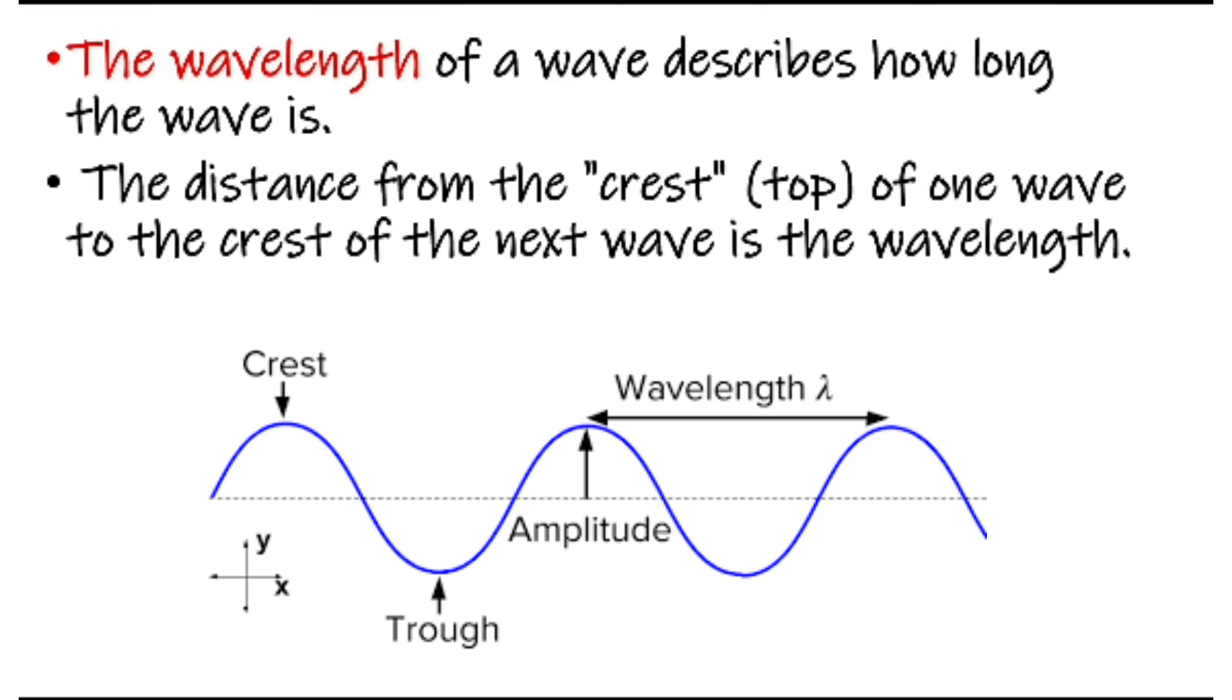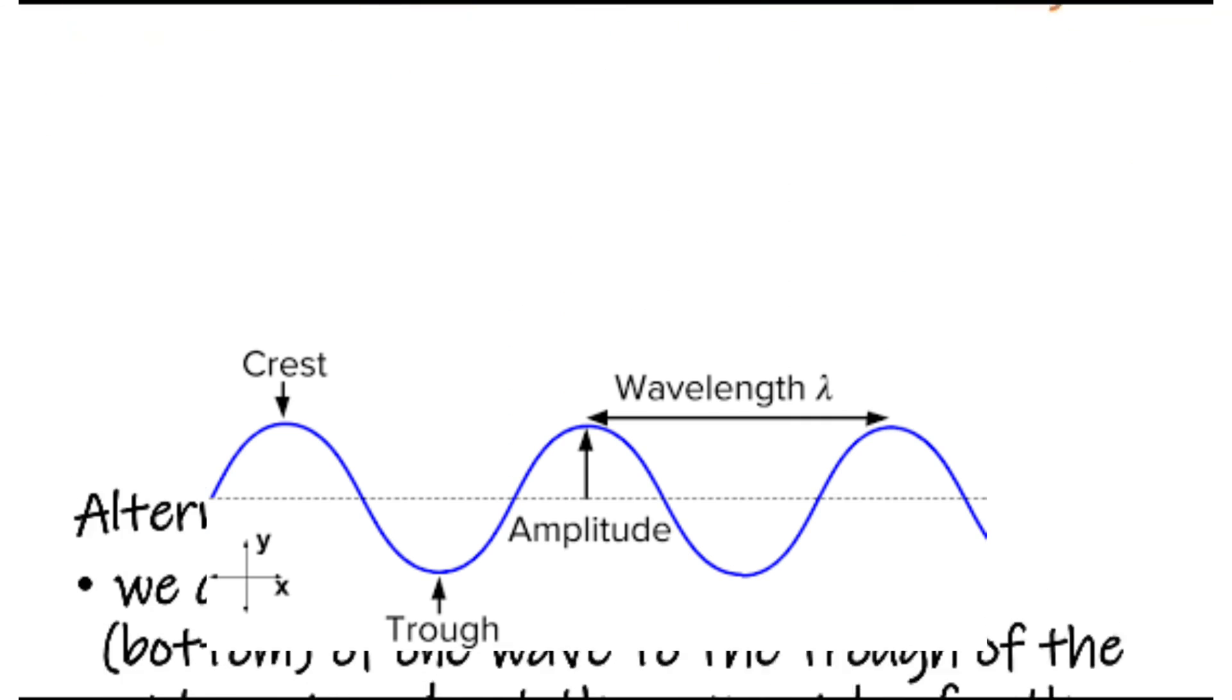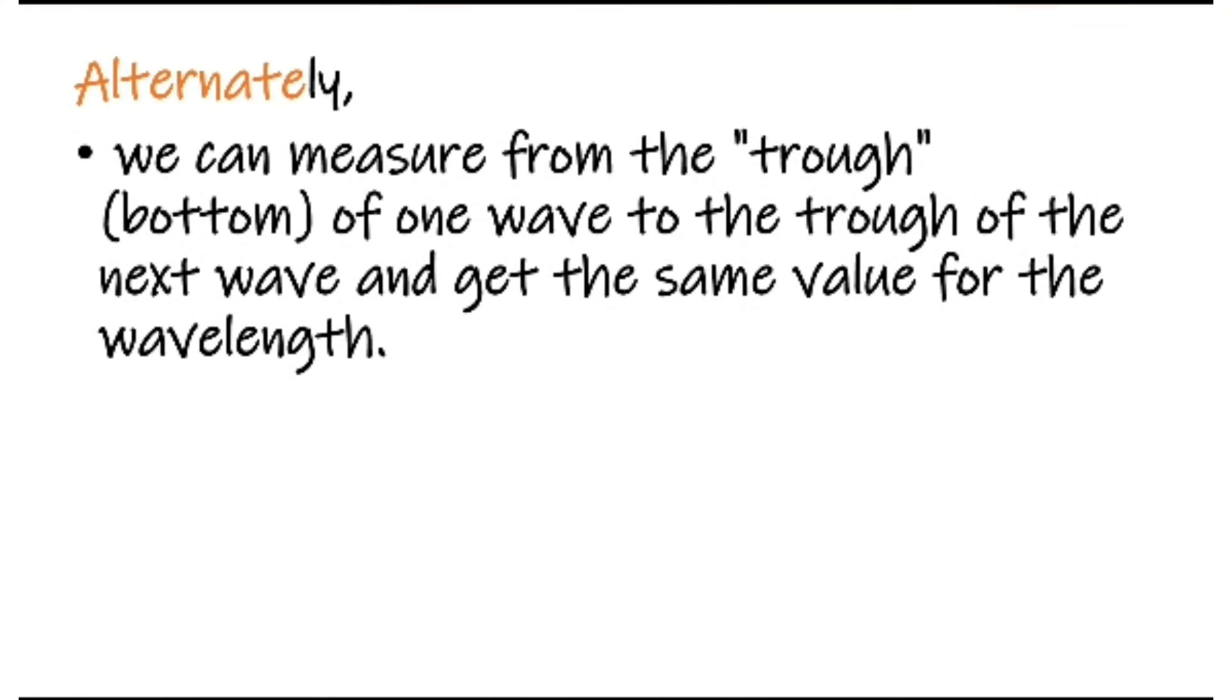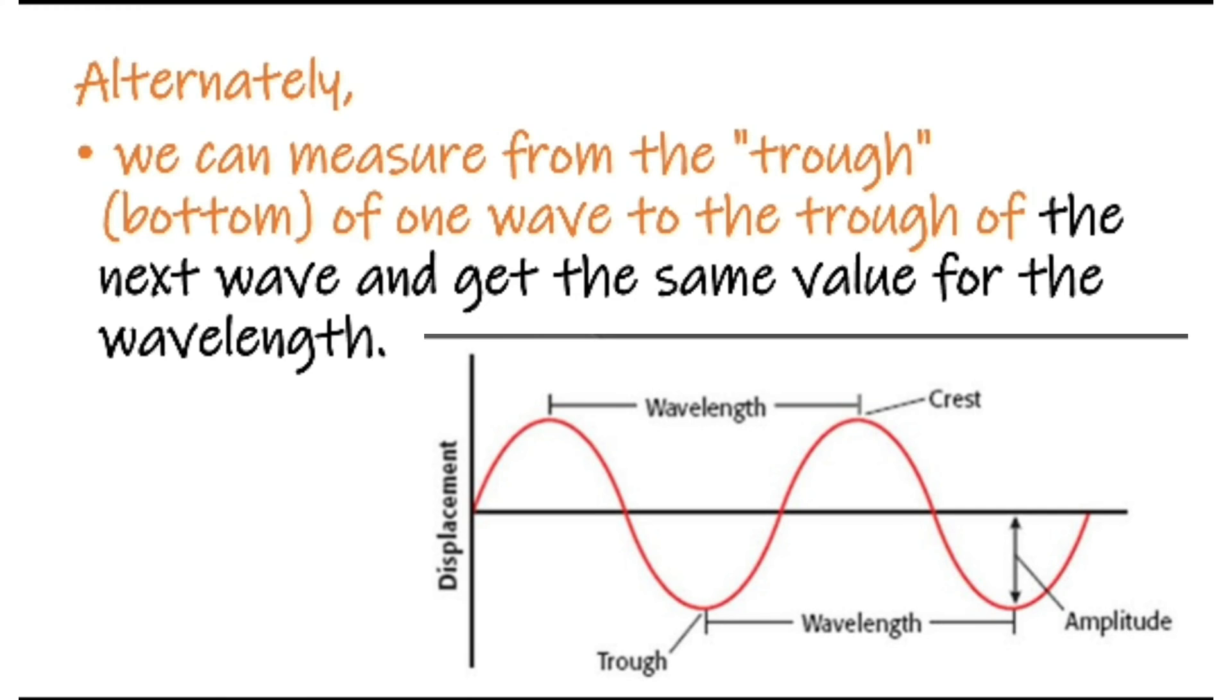The wavelength of a wave describes how long the wave is. The distance from the crest, that is the top of one wave, to the crest of the next wave is the wavelength. Ultimately, we can measure from the trough, that is the bottom of one wave, to the trough of the next wave and get the same value for the wavelength.